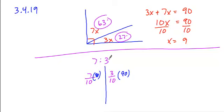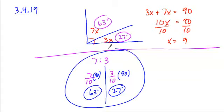What we can do is we can solve for each of these. 3 tenths of 90: 10 goes into 90, 9 times 3, which is 27 degrees. 10 goes into 90, 9 times 7, which is 63 degrees. So we could solve it in this fashion as well.